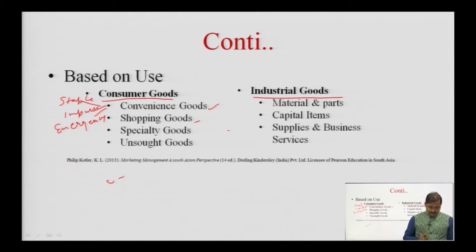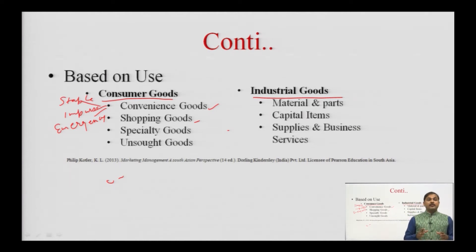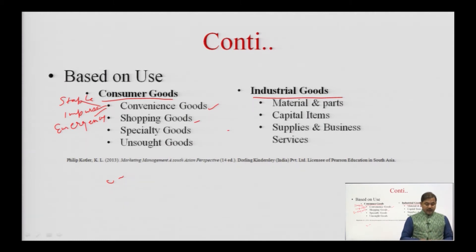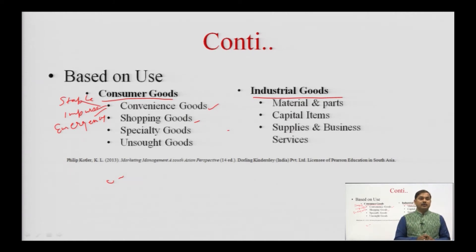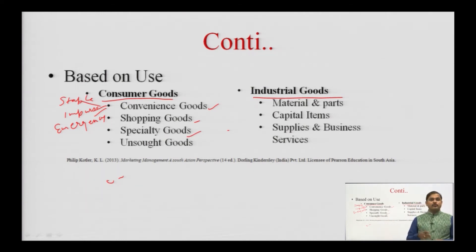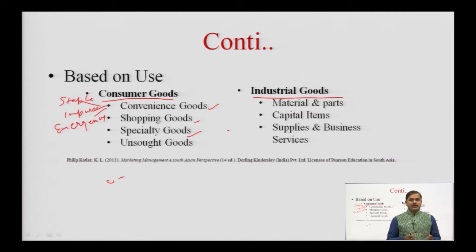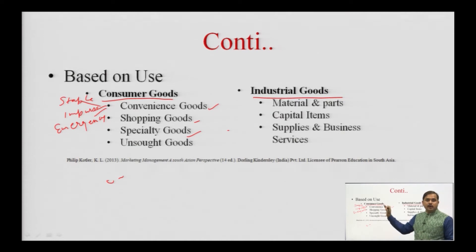The next type is specialty goods, for which special purchase efforts are required. These products are available at select locations and have unique characteristics and brand identifications. The automobile is a good example — a consumer goes to a specific store, chooses a particular brand, selects a model, and takes many calculated decisions because more money is involved and more precautions are taken before finalizing the choice.